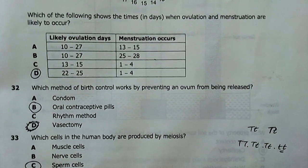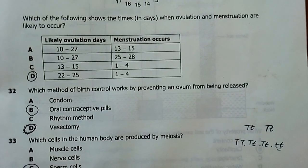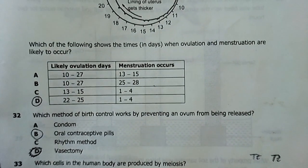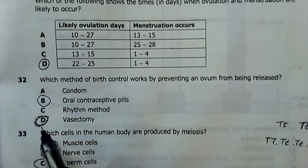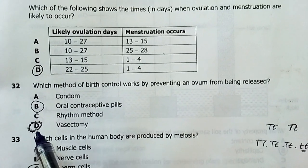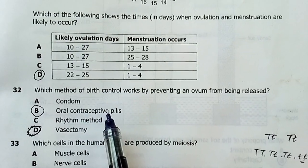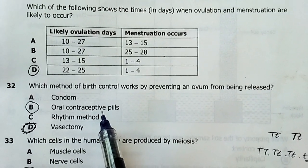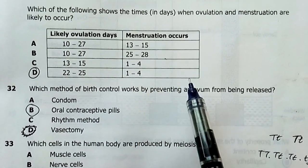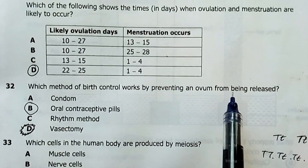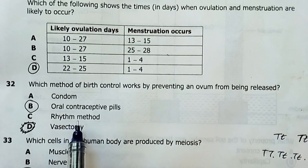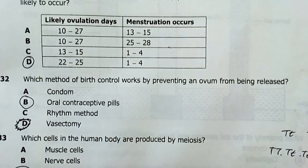32. Which method of birth control works by preventing the ovum from being released? I was in a rush. A, condom. No. Oral contraceptive pills. Yes, these are chemical. So, they prevent ovulation, the ovum from being released. The rhythm method, this is mechanical. Vasectomy, you cut the tubes. So, the answer there is B.